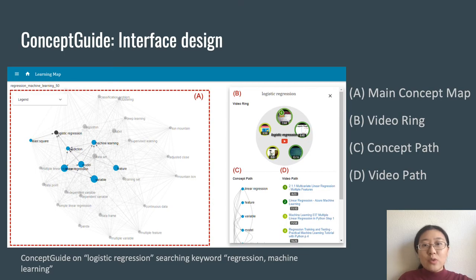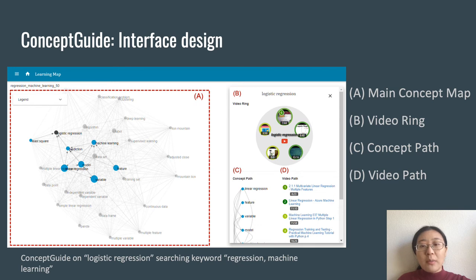In this work, we introduce Concept Guide, a concept map-based video learning system to support online informal learning on YouTube. The system consists of four parts: a main learning concept map, video rings, concept paths, and video paths.